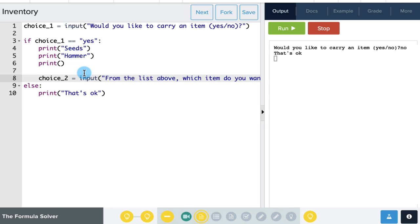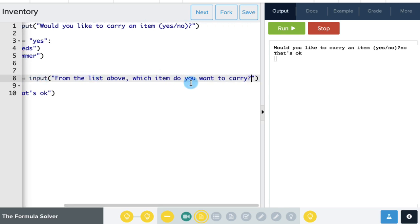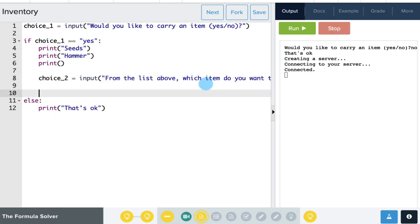So we can use another if else statement to help our program make decisions. So if the user types in seeds, we can type a message, and then otherwise, we'll type a different message. Okay, so let's add that to our code. So our first if statement will have the condition, is choice equal to seeds? So we would write choice two.